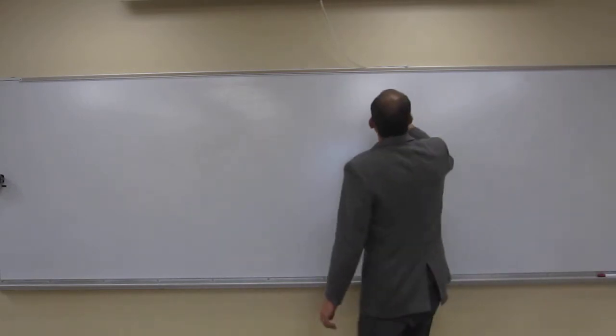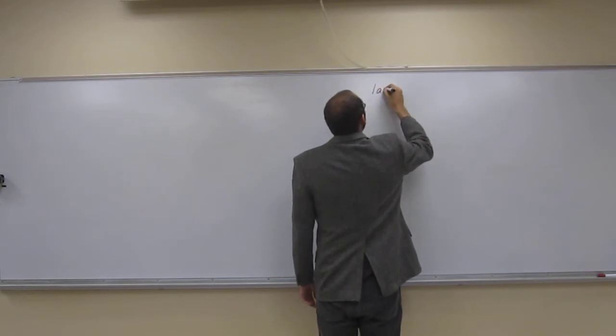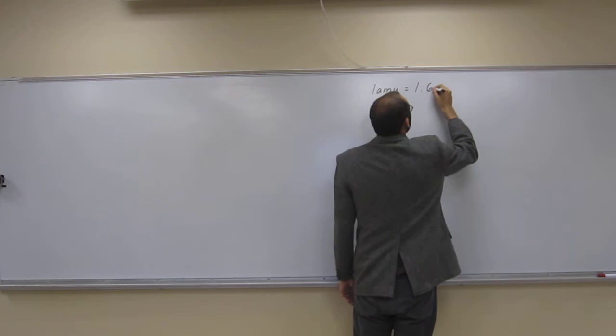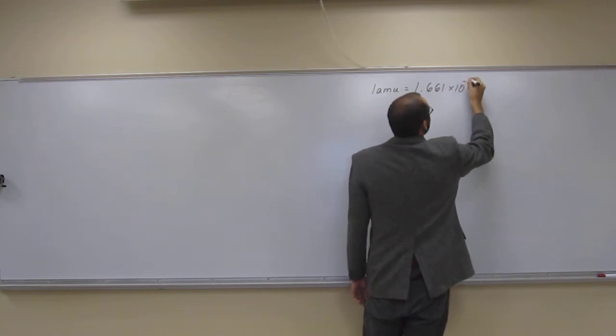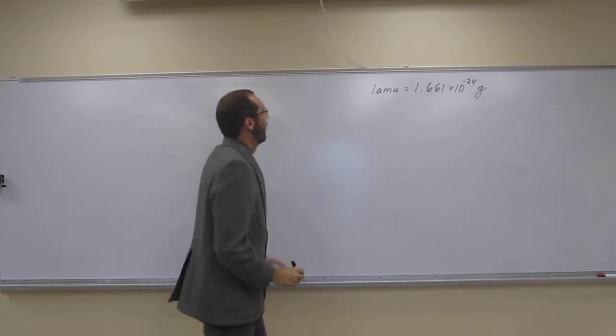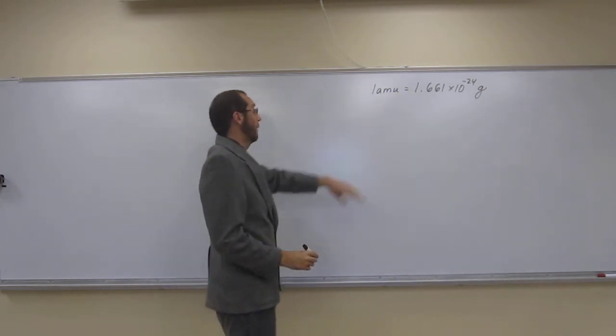Remember, in order to do this, you're going to have to use that conversion factor that's given to you on the test. Let's write it down. So 1 amu equals 1.661 times 10 to the negative 24th grams. Remember that you've got to use that.